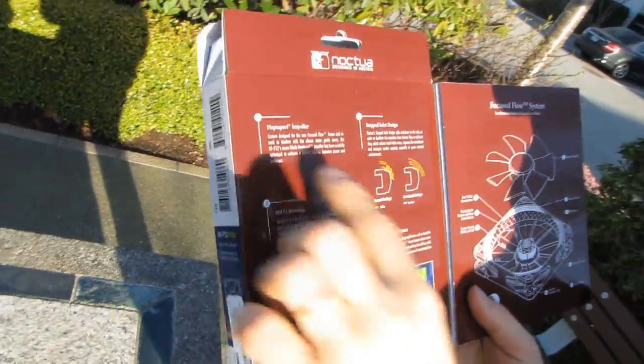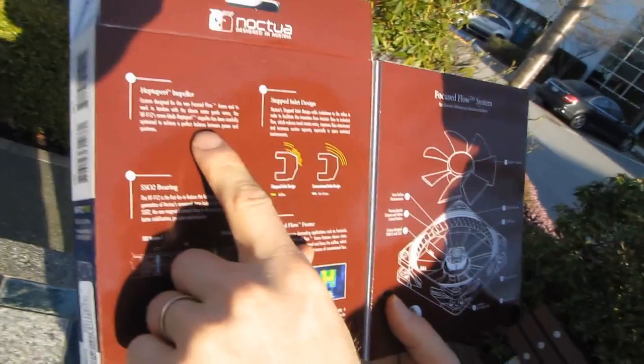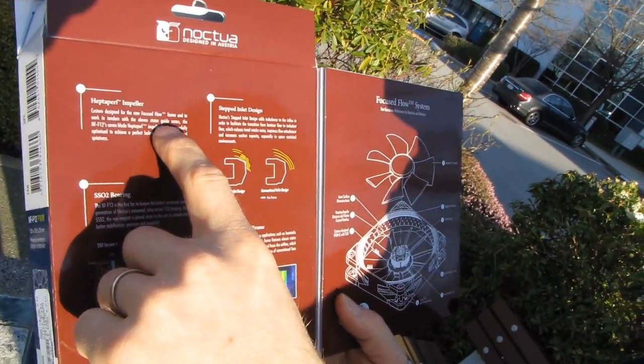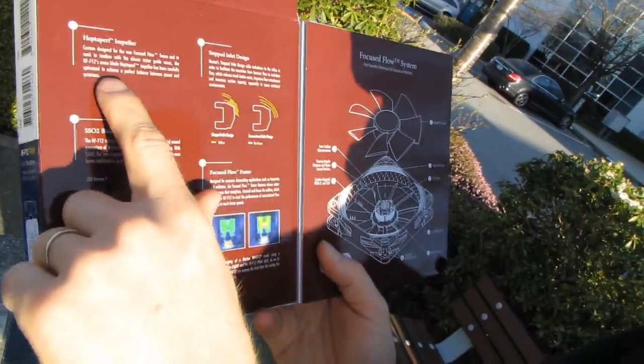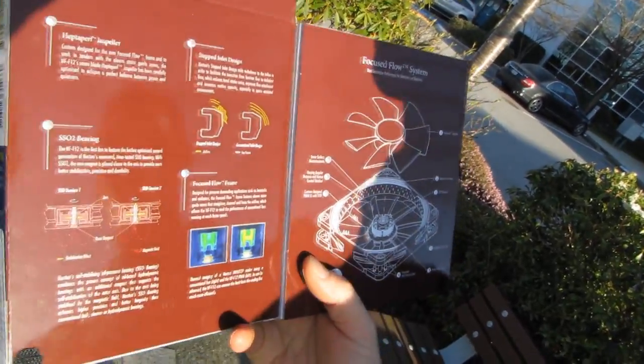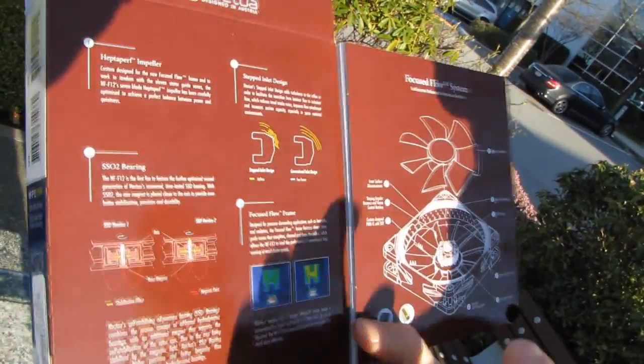It includes a lot of new technology, including their heptaperf impeller which works in tandem with the stator guide vanes—we'll talk about those after—as well as the focus flow frame. Perfect balance between power and quietness is what Noctua is all about.